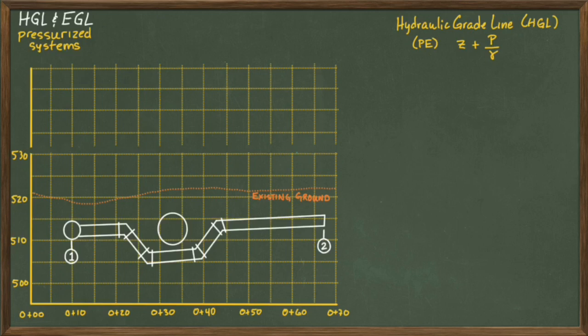Representing the HGL on this profile view begins with drawing in the amount of potential energy at the start of our lateral pipeline, which is the elevation up to the center of the pipeline and the pressure head in the pipeline.